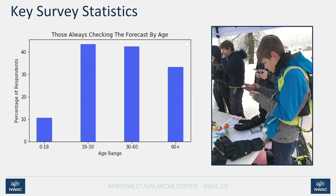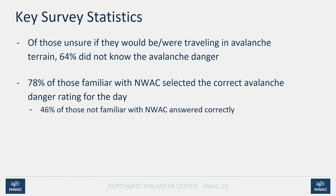Looking at age group and forecast-checking habits, we're reaching a pretty similar number of people in the 19 to 60 age range. We didn't gather much data for the 0–18 or 60-plus groups. NWAC is also launching a youth ambassador program this year to engage the 0–18 age group, so that when they reach the 19–30 range those numbers go up. Even the top bars show just over 40% of travelers always checking the forecast before heading out.